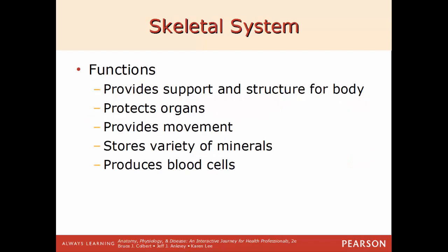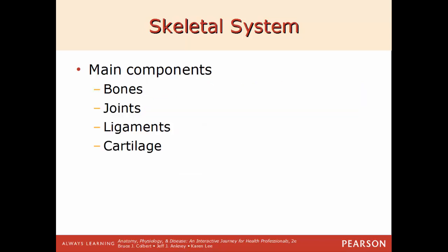Starting with the skeletal system. Its functions include providing support and structure for the body, protection of internal organs, providing movement — muscles attach to bones to enable movement — storing a large variety of minerals, and producing blood cells. All blood cells — white blood cells, red blood cells, and platelets — are formed within bone in a specific place within longer bones. The main components include not just bones themselves but also ligaments, joints, and cartilages.